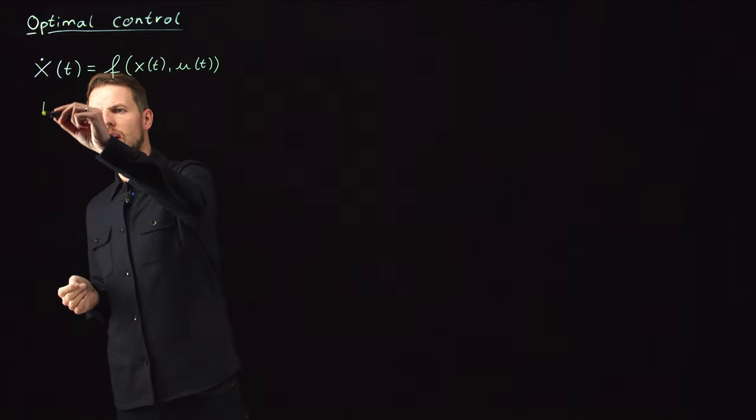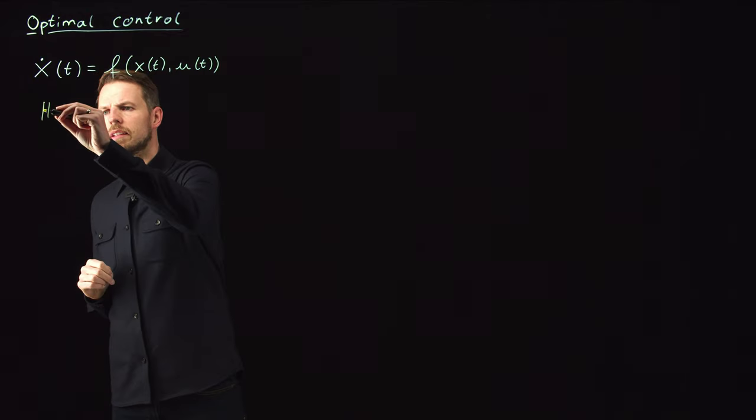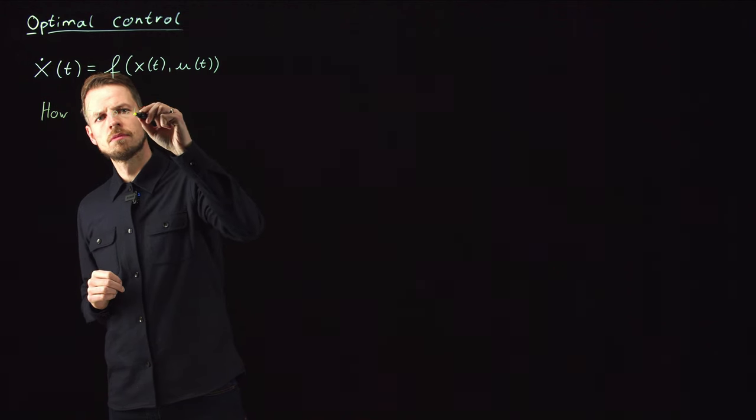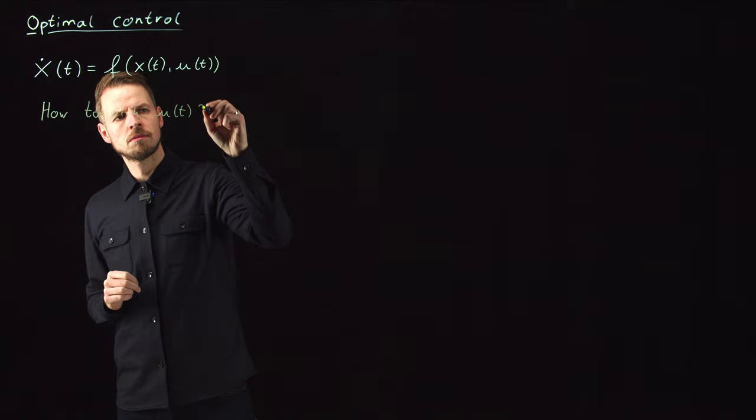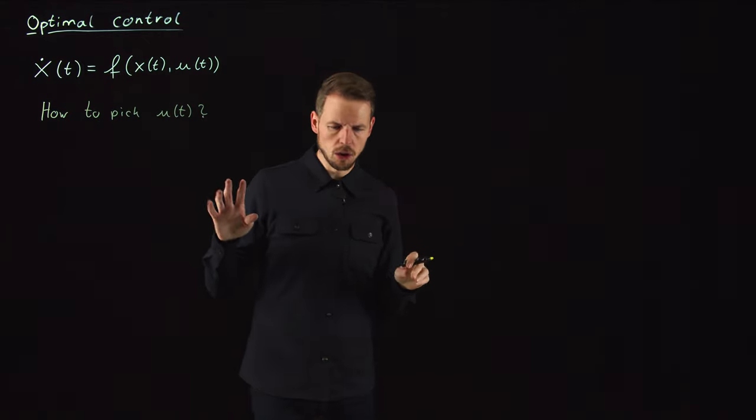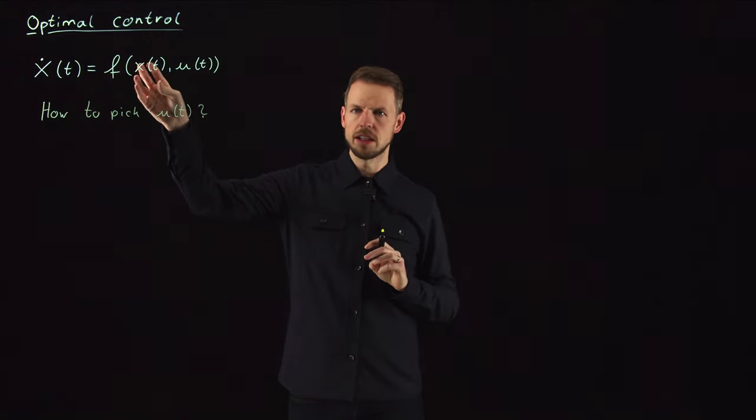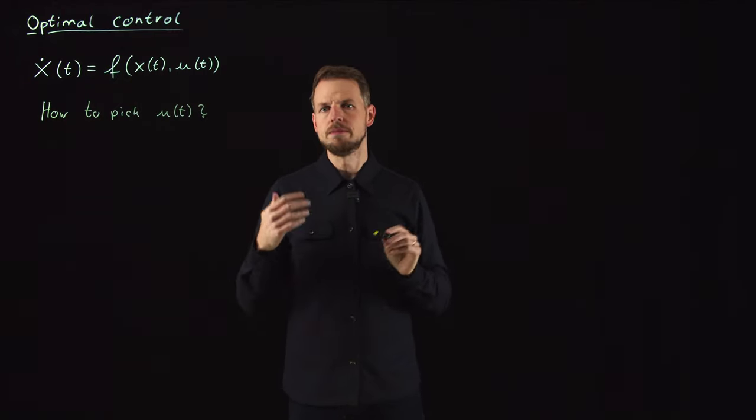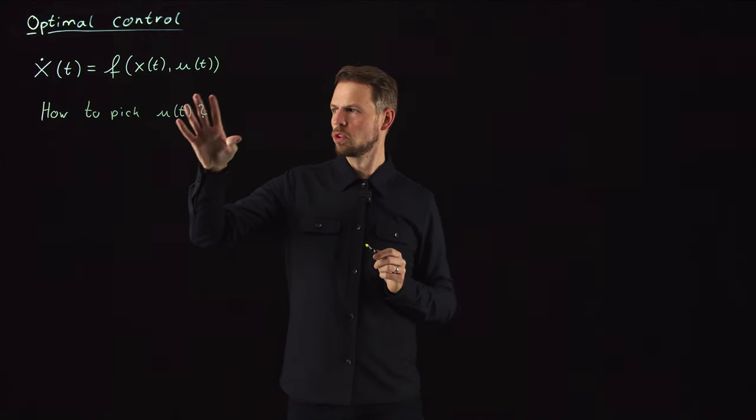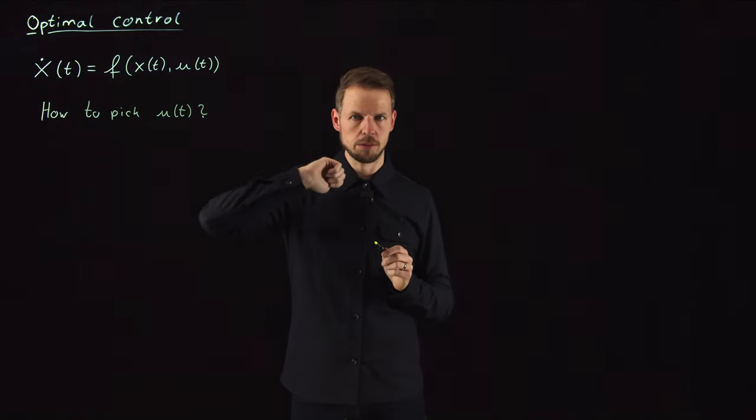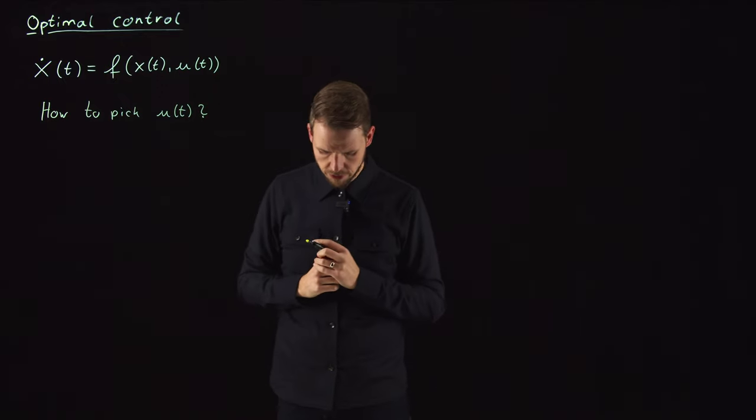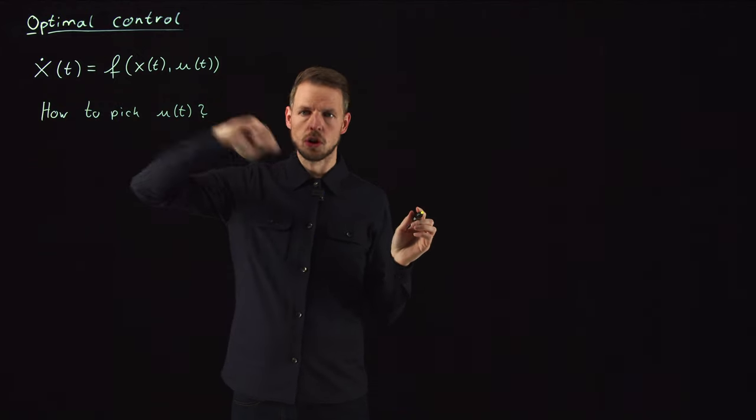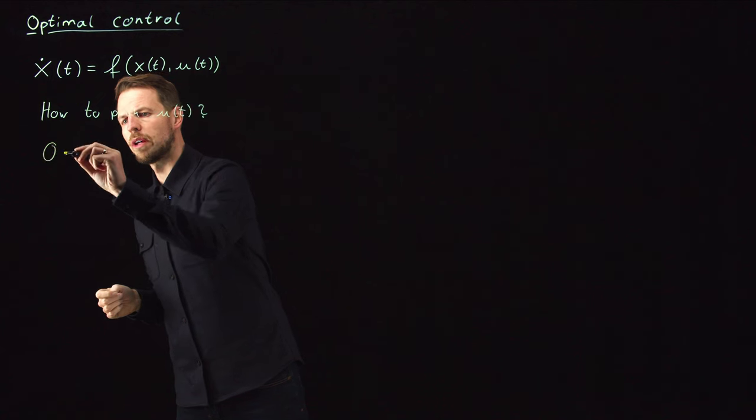Let's start at the very beginning. The question we need to answer in optimal control is how to pick U. Until now we've only seen situations where we have the state and input, simulate the system, and make predictions. But what if I want to pick a particular input to design a particular system behavior? The first question we must ask is: optimal with respect to what?